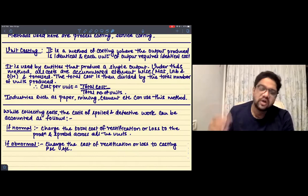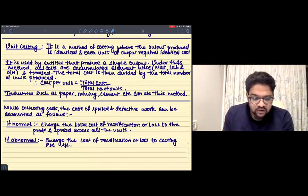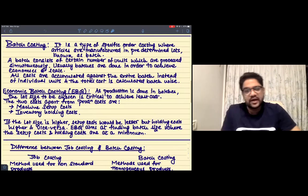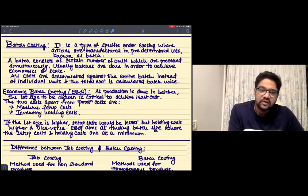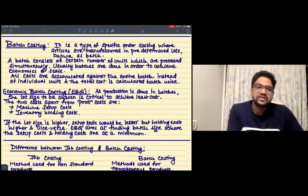Then you have batch costing. And what happens under batch costing, it is basically the same where you're making a shirt, one shirt, or rather you're making 10 shirts for the same.